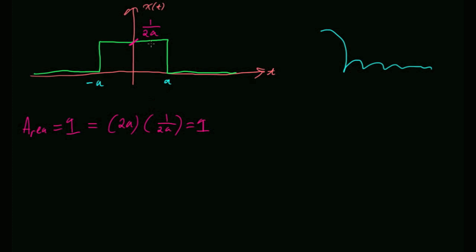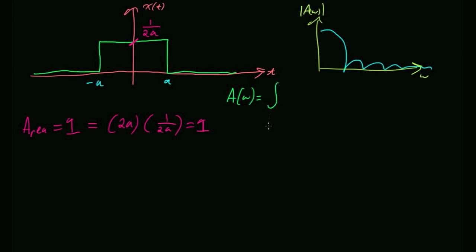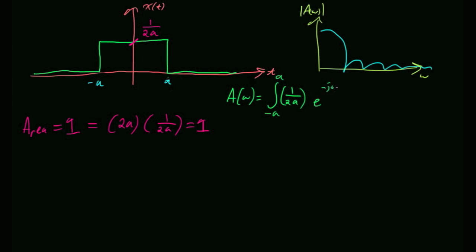Should we find the Fourier transform? Let's do it. A(ω) equals the integral from minus A to A — technically minus infinity to infinity, but there's only non-zero stuff between minus A and A. So integral from minus A to A of (1/(2A)) times e to the negative j-omega-t, dt.